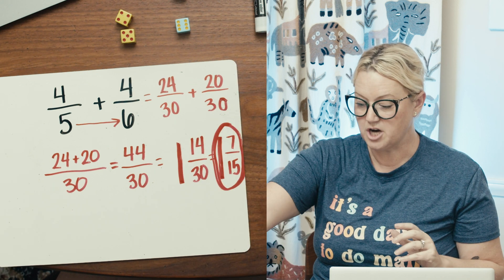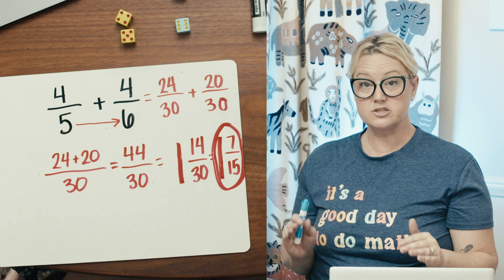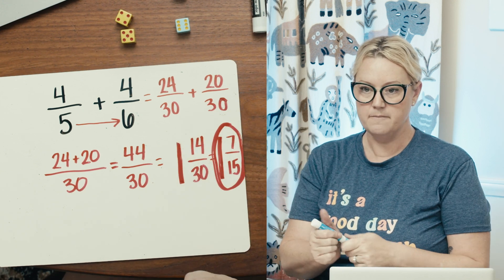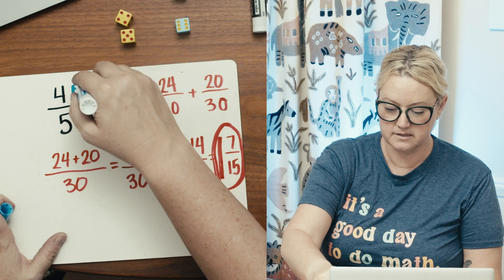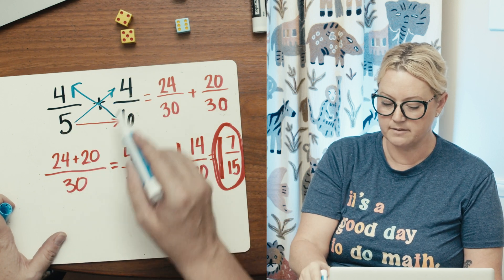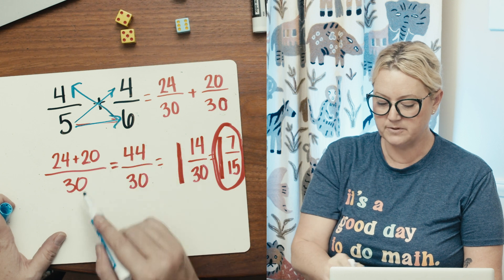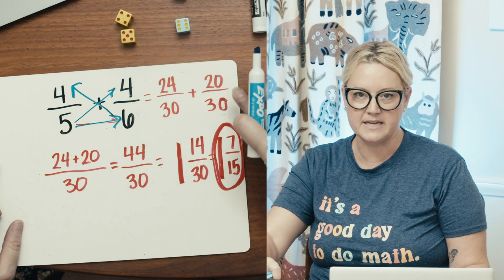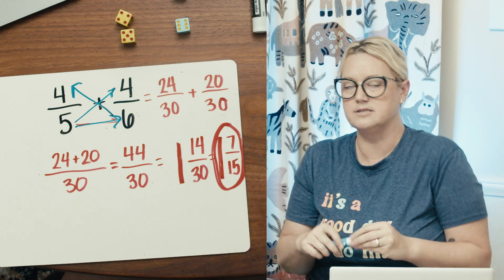Crisscross applesauce is just a shortcut. So crisscross applesauce is where you just don't need to write this step out. Okay, you do criss, six times four gives you 24. Cross, five times four gives you 20. And then applesauce is 30 on the bottom. So again, just a shortcut. You just cut out that piece of writing out both of the equivalent fractions. It saves a little bit of time. And sometimes it's a little bit easier to add or subtract in your head like that. That's math.